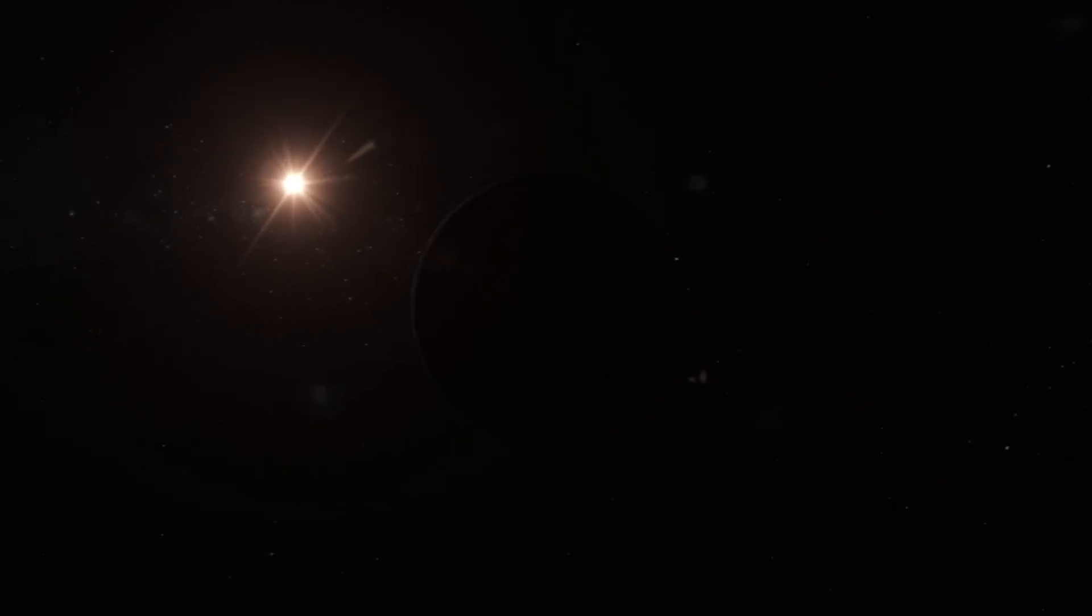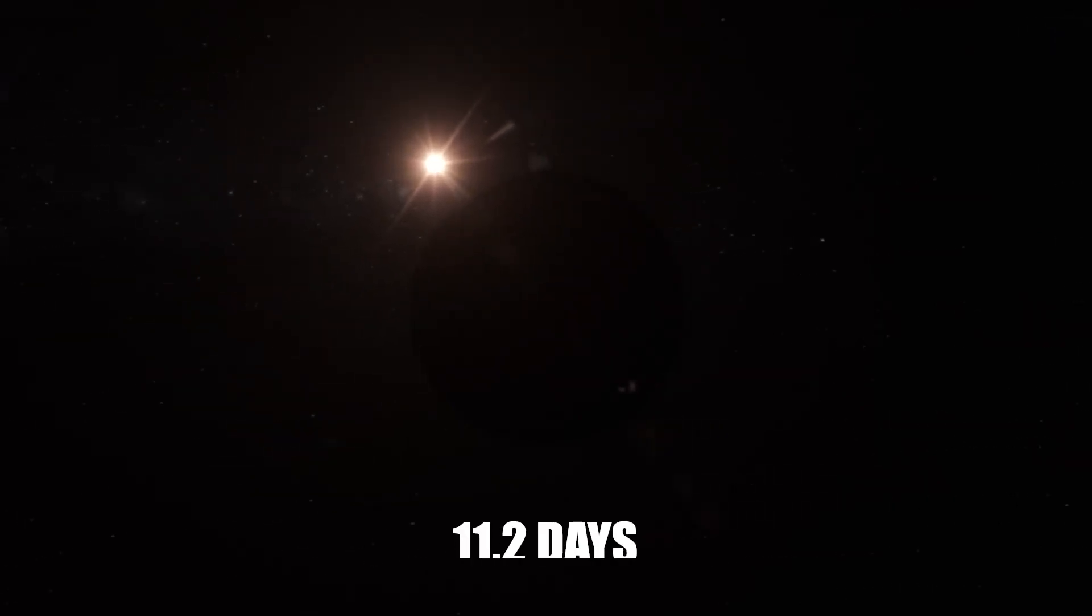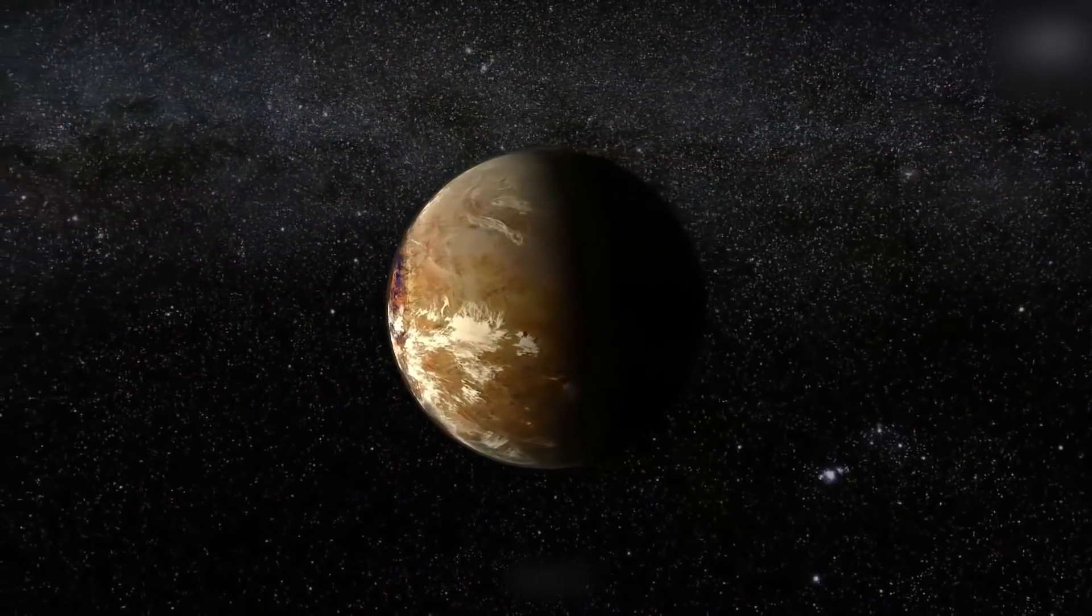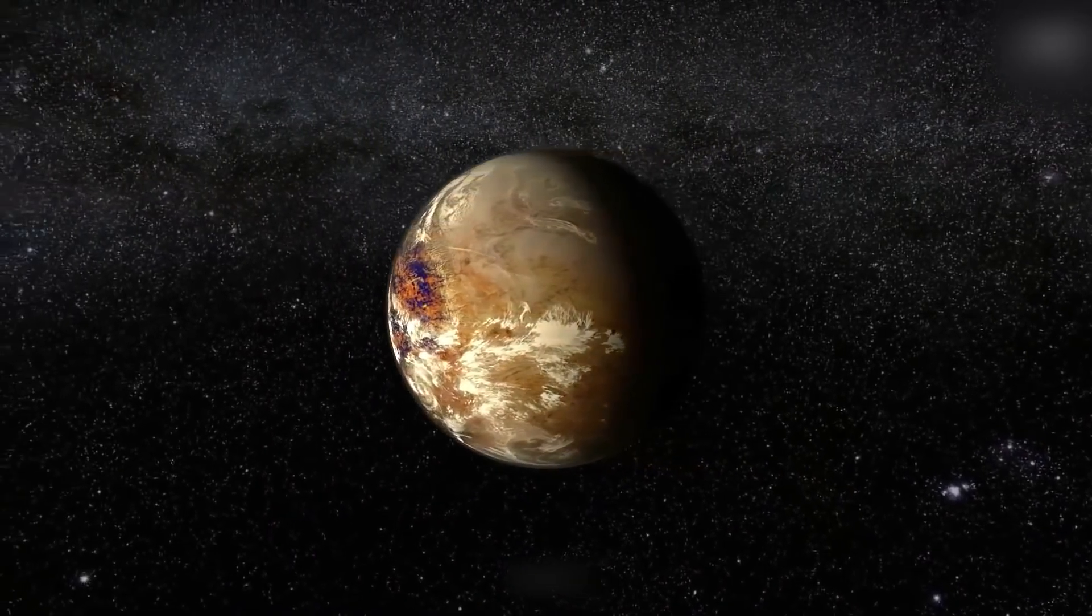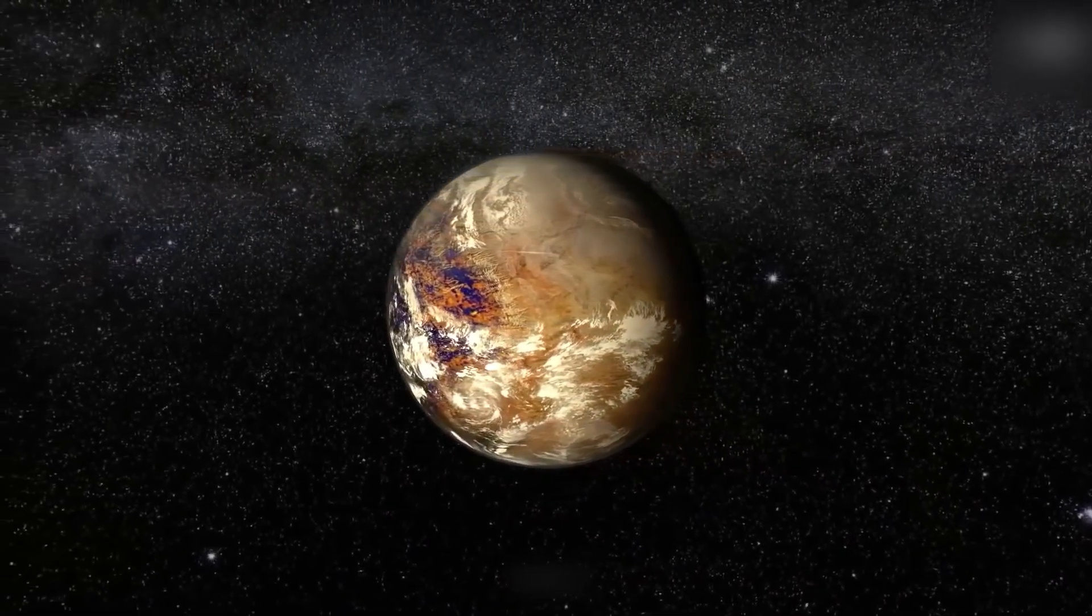One complete revolution around Proxima Centauri takes about 11.2 days, or about 5% of the distance that Earth goes around the Sun. Its mass is 1.6 times that of Earth, while its diameter is 1.3 times that of our own planet.